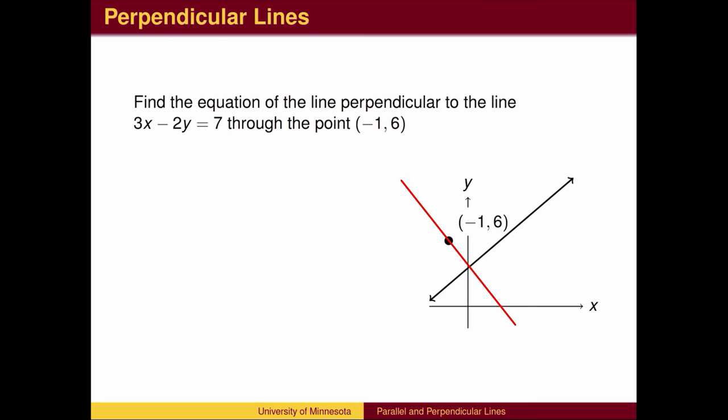First, we need to find the slope of the given line, then find the perpendicular slope by taking a reciprocal and changing sign. Solving the equation of the line for the variable y, we get the slope-intercept form. The slope of the original line is 3 halves.